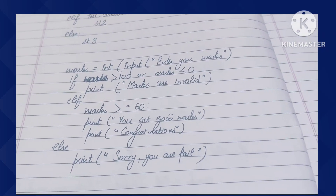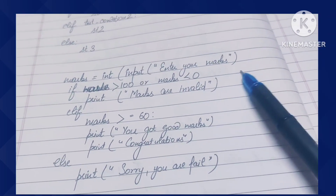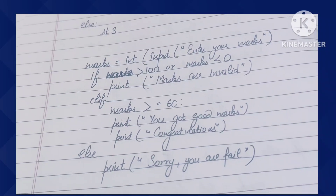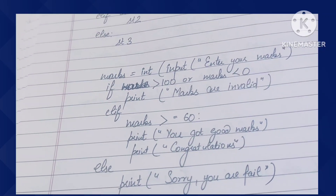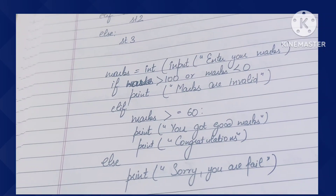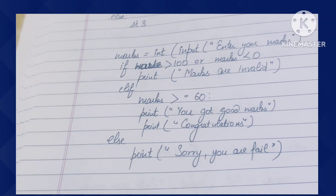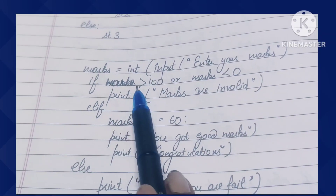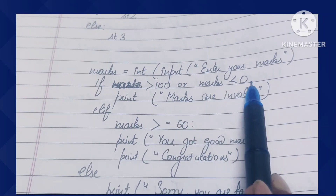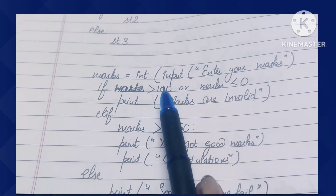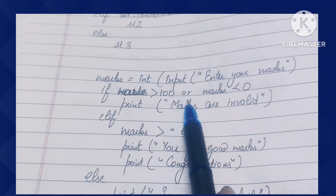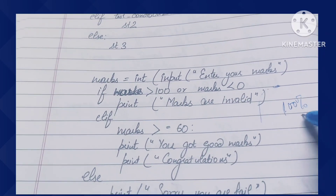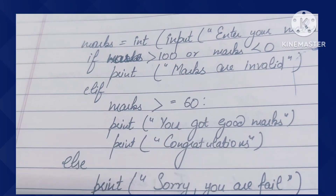Now we see an example using marks with amendments to the program. If marks are greater than 100 or marks are less than 0, then marks are invalid — negative or over 100 percentage are invalid marks. When someone enters such a value, we print a message that marks are invalid. So we have a condition: if marks are greater than or equal to 60, congratulations — you got good marks. We can print multiple statements in the if block.